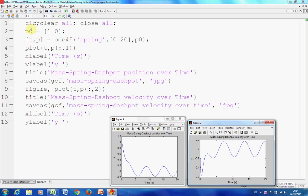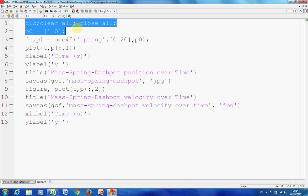Very briefly, apologies there's not much comments in this, I just want to get it done. Line one clears the screen, closes workspace and closes all figures. There are our two initial conditions: the initial condition for the position is 1 and for the velocity is 0.